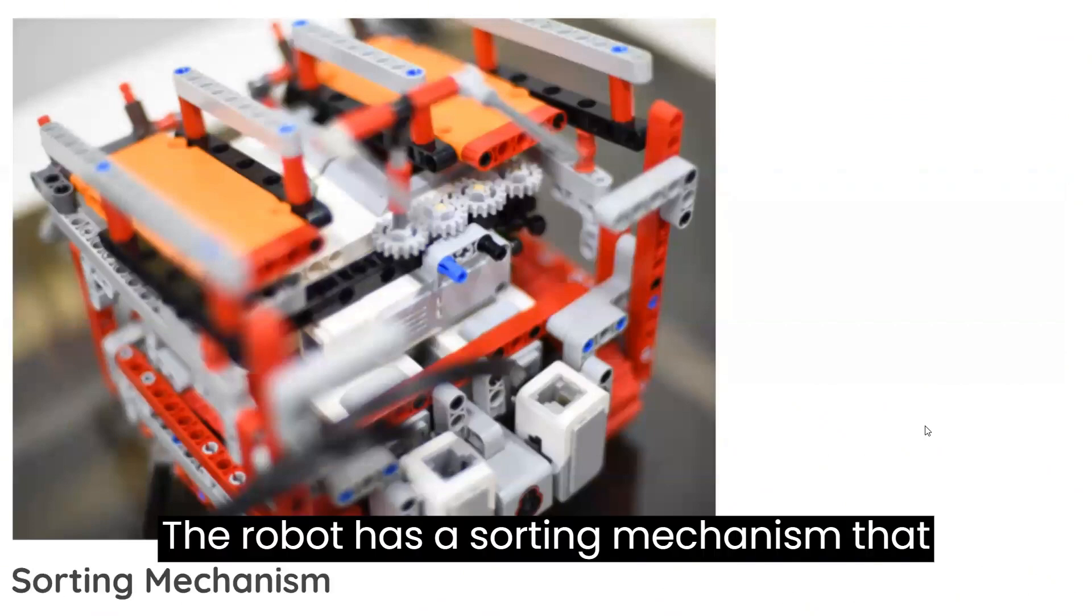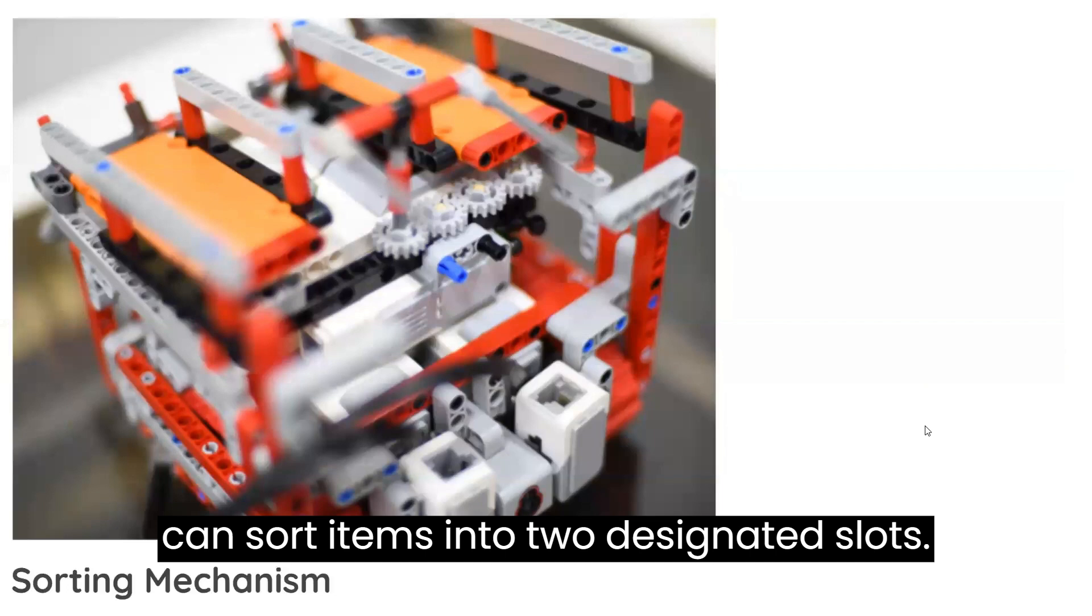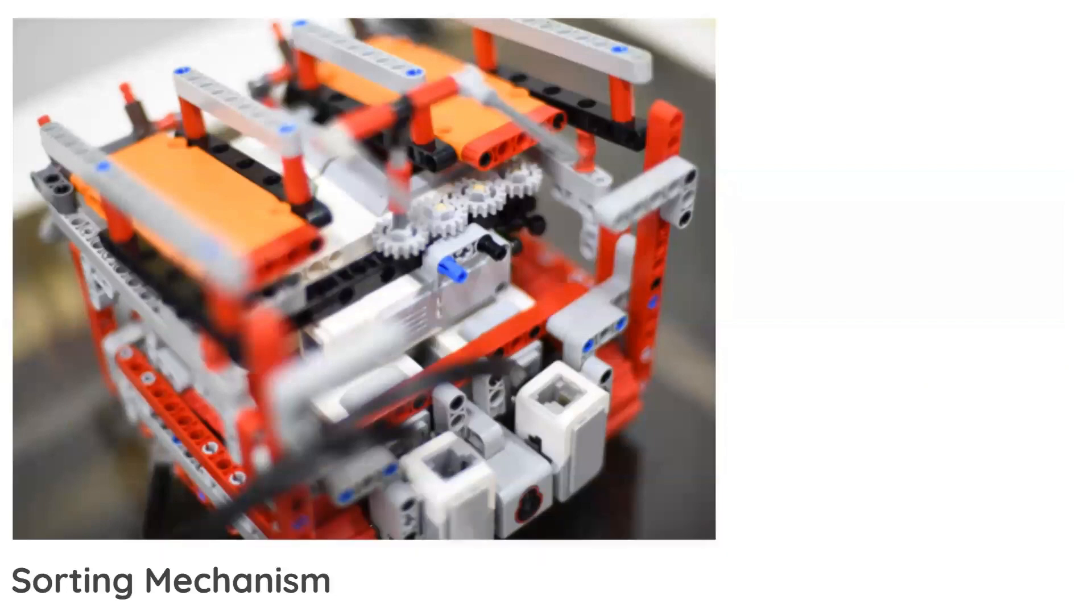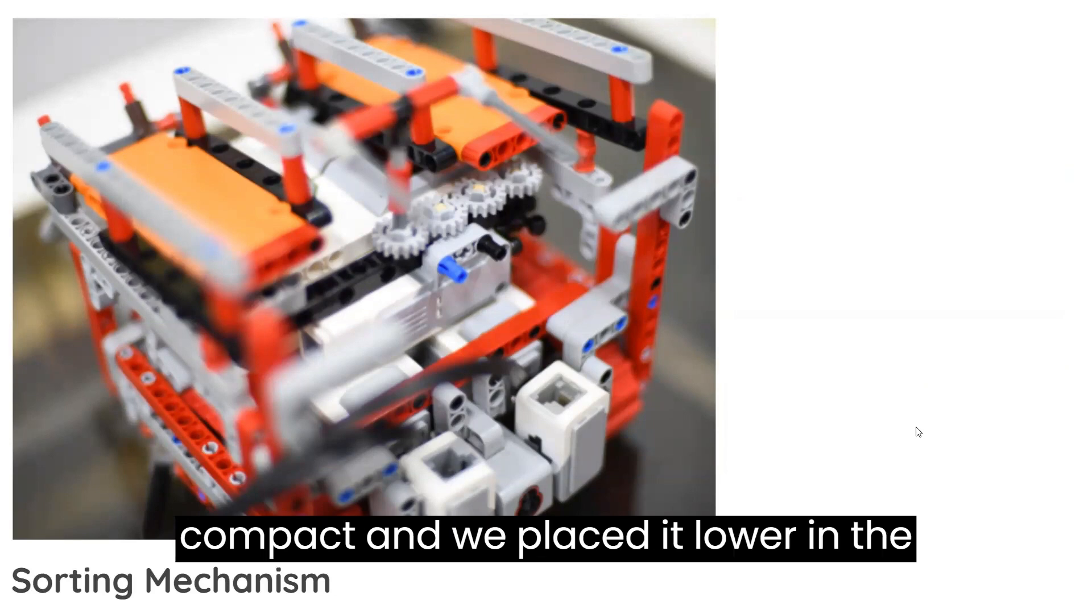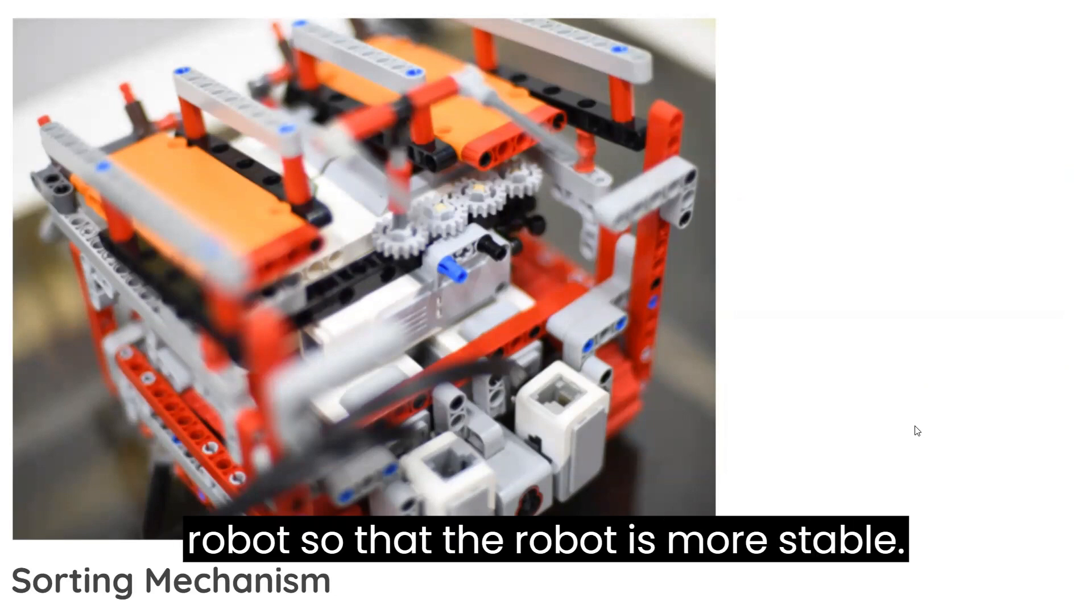The robot has a sorting mechanism that can sort items into two designated slots. We use the medium motor as it is more compact and we placed it lower in the robot so that the robot is more stable.